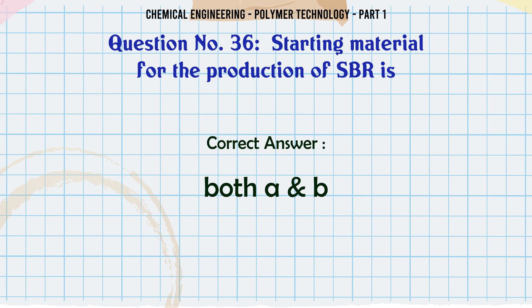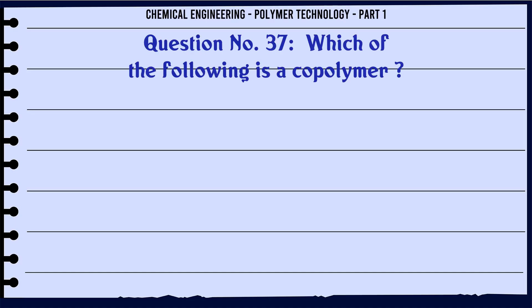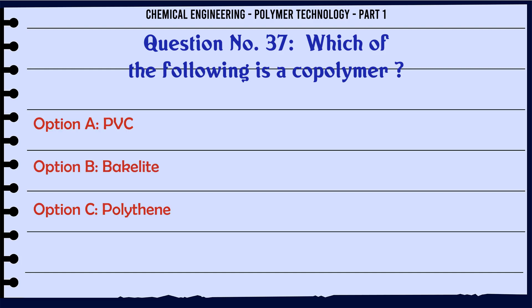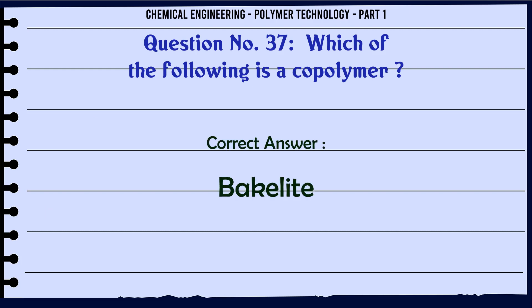Which of the following is a copolymer? A. PVC, B. Bakelite, C. Polythene, D. Teflon. The correct answer is Bakelite.